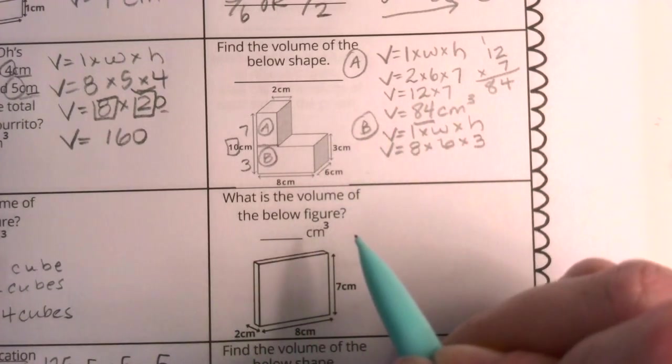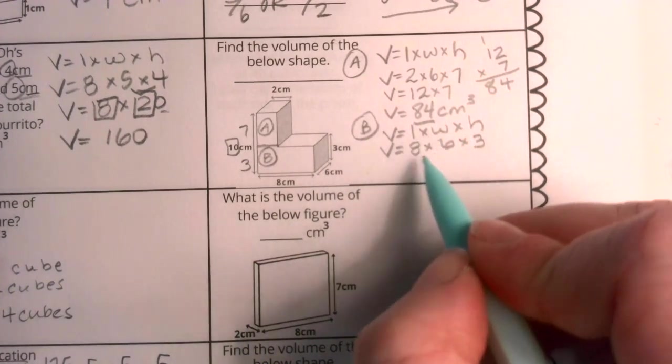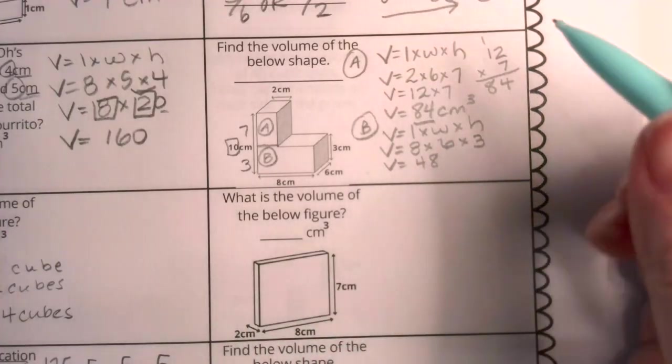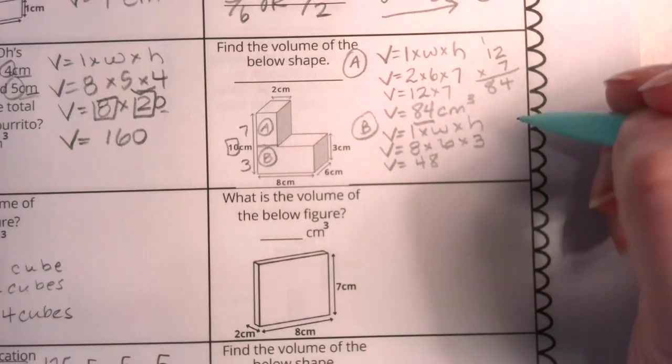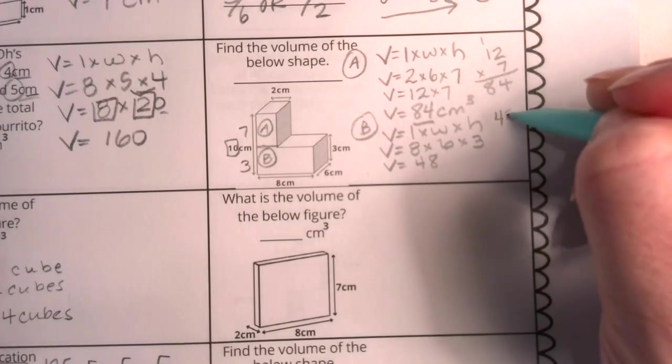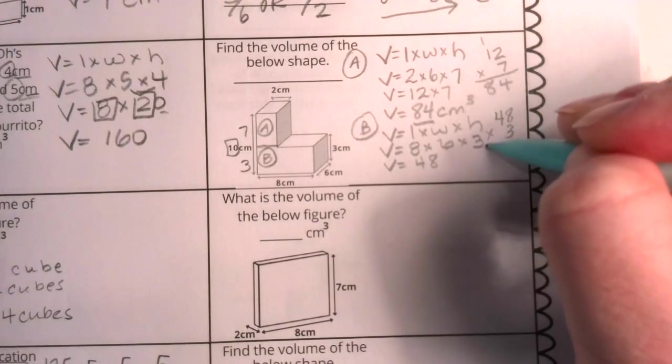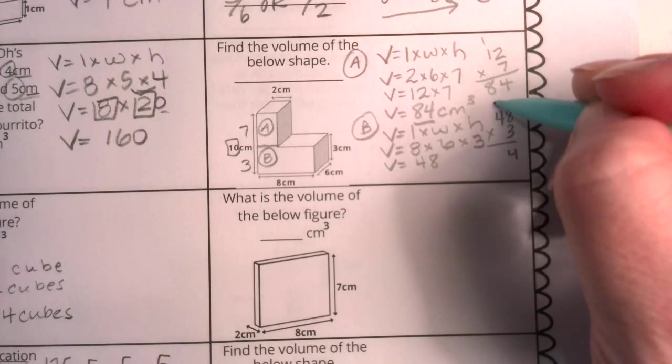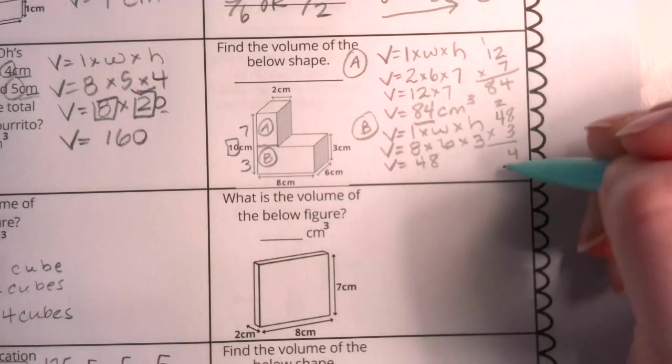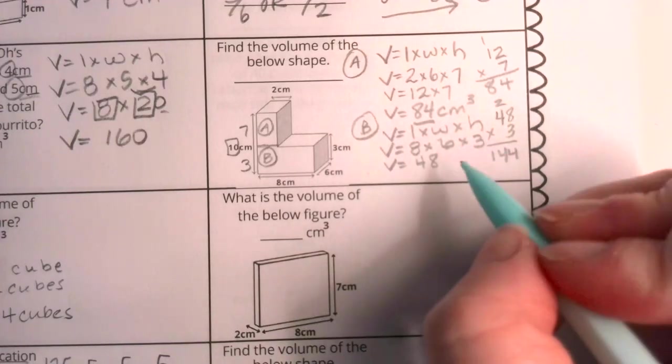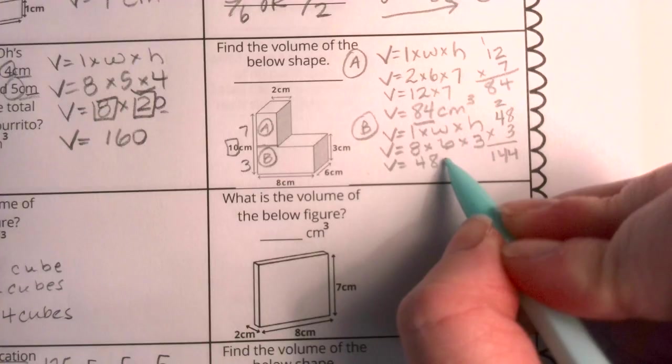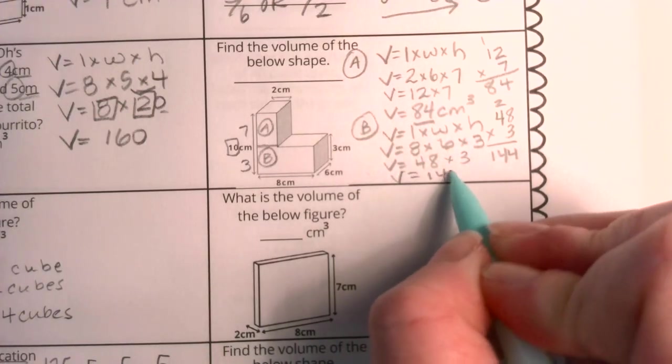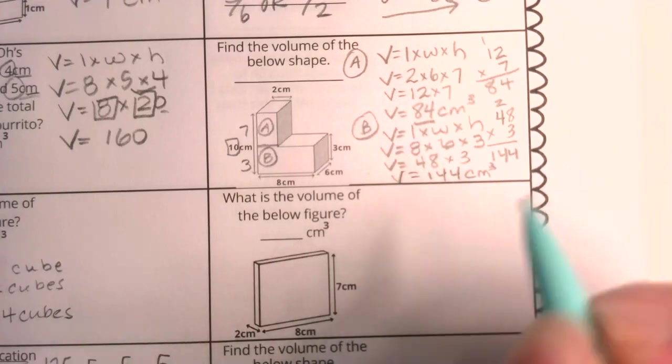Now I'm going to start multiplying together. I'm going to combine this. I know that 8 times 6 is 48. Now I am going to come over to the side, and I'm going to do 48 times 3. 8 times 3 is 24. Here's my 4, carry my 2. 8 times 4 is 12, plus 2 is 14. I know that I have 48 times 3, which equals 144 centimeters cubed.